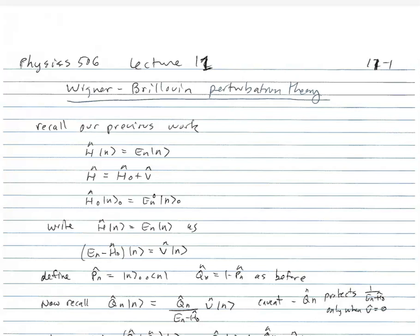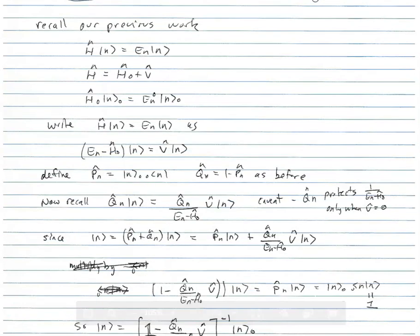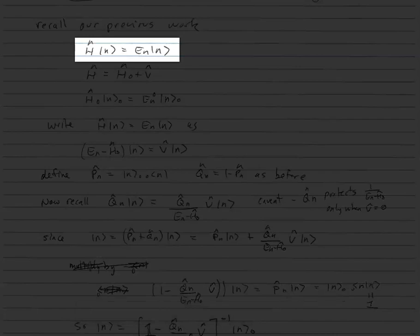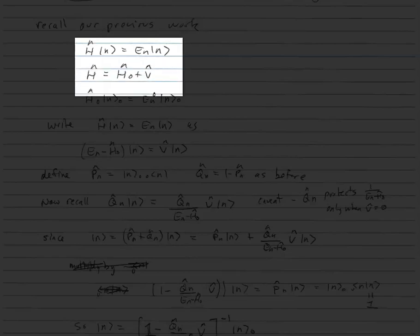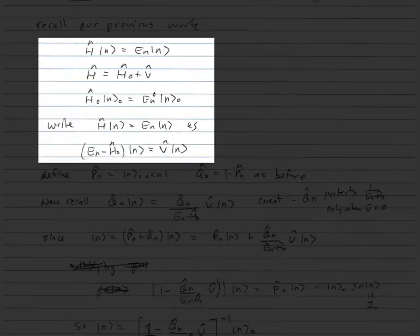Let's recall from our previous work that the problem we're trying to solve involves the Hamiltonian acting on the exact ground state, and the energy is En times that exact ground state. We separate the Hamiltonian into the unperturbed part H0 and the perturbation V. The unperturbed Hamiltonian H0 has a set of eigenfunctions given by |N⟩₀, which satisfies H0|N⟩₀ = En0|N⟩₀. We rewrite the equation H|N⟩ = En|N⟩ as (En − H0)|N⟩ = V|N⟩, with En0 and a delta En on the other side. This is already a difference from what we did in the last lecture.